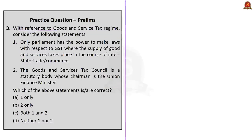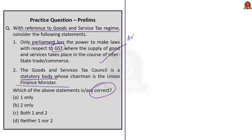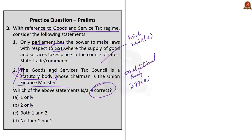The next question states: with reference to the Goods and Services Tax regime, consider the following statements. Statement 1: only Parliament has the power to make laws with respect to GST where the supply of goods and services takes place in the course of interstate trade or commerce. Statement 2: the Goods and Services Tax Council is a statutory body whose chairman is the Union Finance Minister. Statement 1 is correct, as per Article 246A(2) of the Indian Constitution. Statement 2 is incorrect — the GST Council is a constitutional body, not a statutory body, as per Article 279A, which provides for constituting a GST Council; however, the second part — that the Union Finance Minister is the chairperson — is correct. Therefore, the right option is A, that is 1 only.